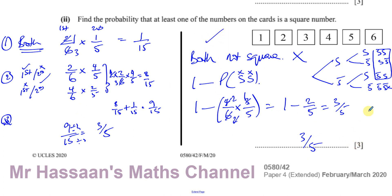We get to the same answer both ways. The complement method is by far the easiest approach — when you need to combine all probabilities except one, doing one minus that single unwanted probability gives you everything else combined. I prefer that method, but both make sense.